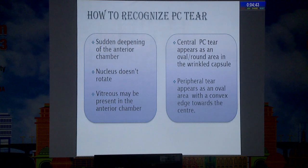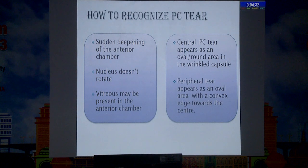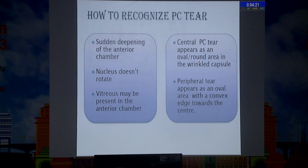How to recognize that there is a PCR? As you go on doing surgery, suddenly there will be deepening of the anterior chamber, and the nucleus does not rotate — whether it's FACO or SICS, whatever you want to do — the nucleus is not rotating. Vitreous may be present in the anterior chamber, maybe through one corner. If it's a central posterior capsular tear, it appears as an oval or round area, where the peripheral tear appears as an oval area with a convex edge towards the center.